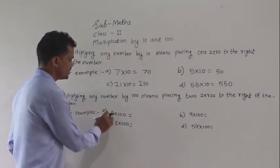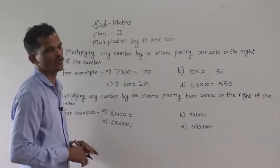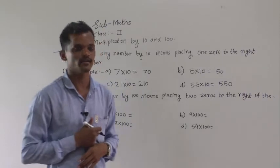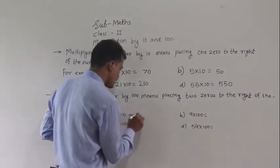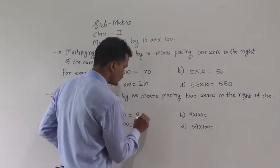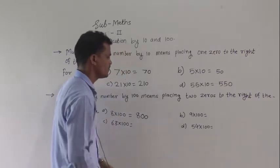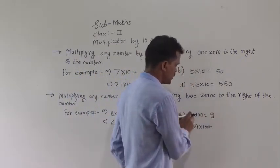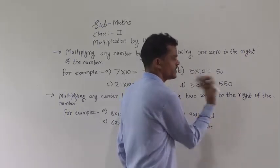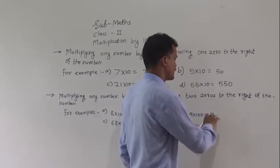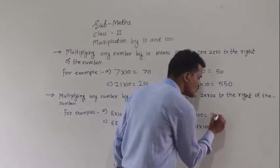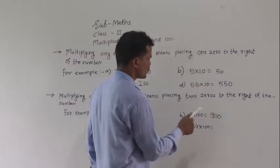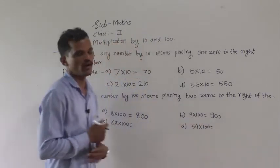First example: 8 into 100. You have to put 2 zeros at the right of that number. Write 8 and after 8 write 2 zeros, so 800 is the answer. Then 9 into 100: write 9 and at the right of that 9 put 2 zeros, so 900 is the product of 9 and 100.